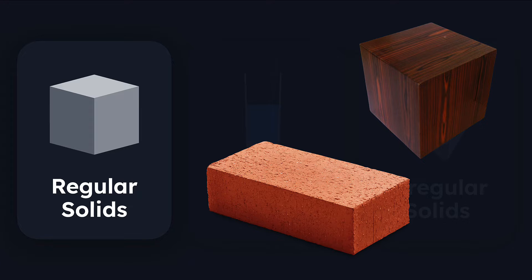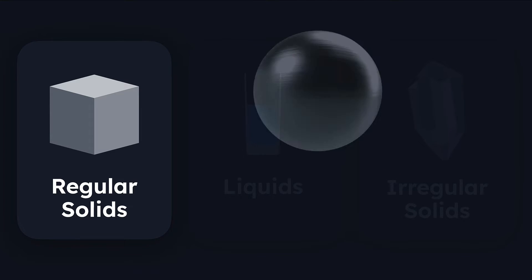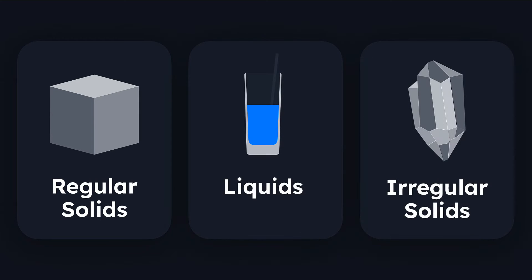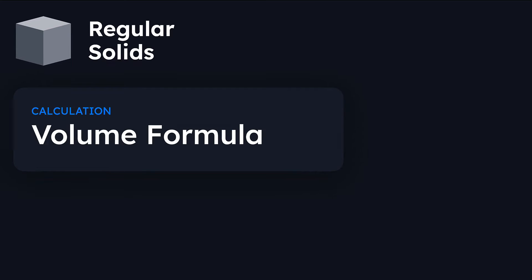Regular solids also include other shapes like spheres, cylinders, and pyramids. However, we're not going to cover those in this particular video. We are going to look at liquids and irregular solids as well, but let's begin with regular solids.